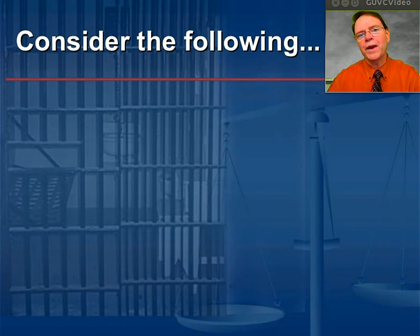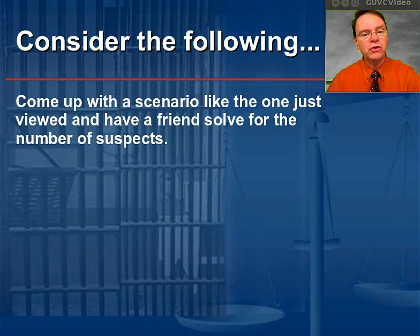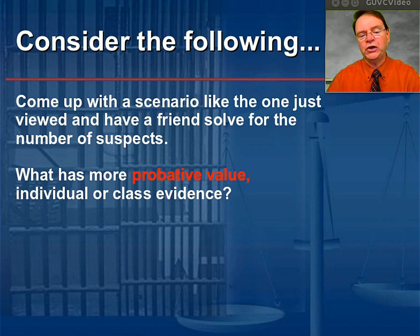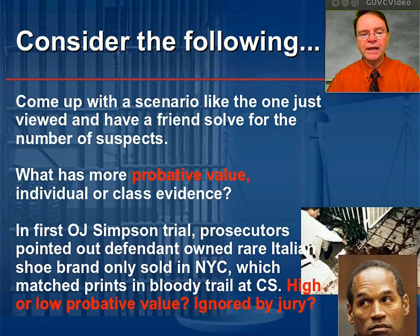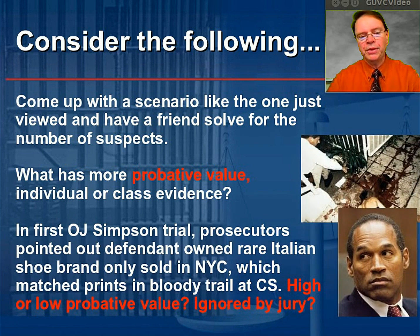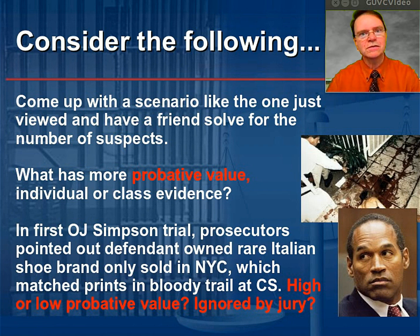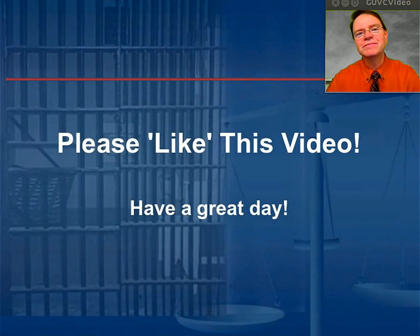In closing, consider the following. First, come up with a scenario like the one you viewed and have a friend solve for the number of suspects — see how close the two of you come to your answer. Next, consider: what has more probative value, individual or class evidence, and can you explain why? Thirdly, from 1994 — the first O.J. Simpson trial — prosecutors pointed out that the defendant owned a rare Italian shoe brand only sold in New York City, which matched those found in the bloody trail at the crime scene. Keep in mind O.J. Simpson and the crime scene were both in Los Angeles. Would those Italian shoe prints have high or low probative value? And was this evidence ignored by the jury? Thanks for watching. Bye-bye.